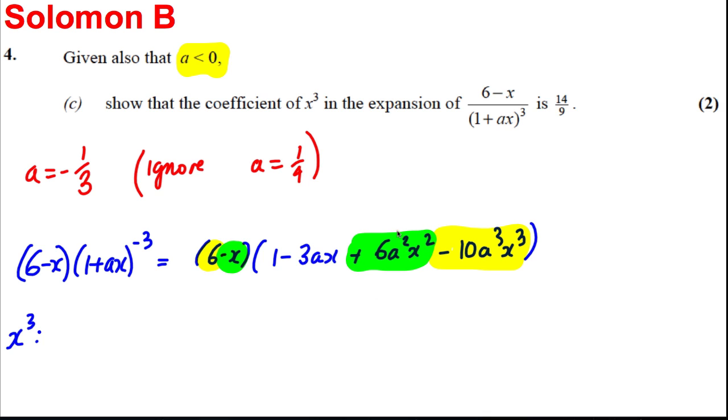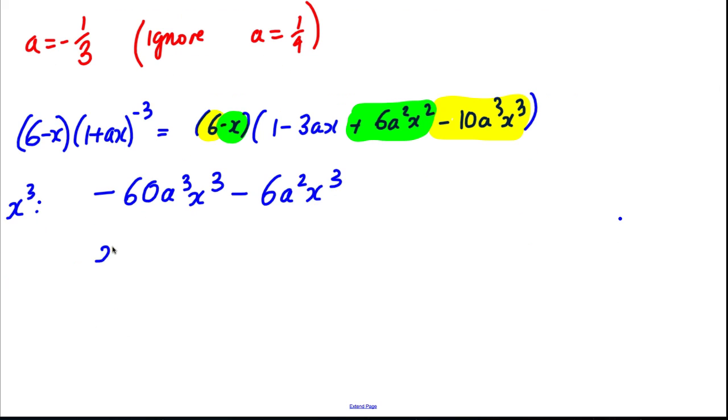What we're going to do is six multiplied by this is certainly going to give us an x cubed, and negative X multiplied by this is going to give us an x cubed as well. So let's multiply that out. Six times that would be negative 60A cubed X cubed, and this times this would be negative 6A squared X cubed. And again factorizing out the x cubed here, we'd have negative 60A cubed minus 6A squared.